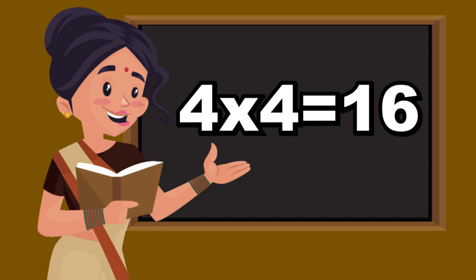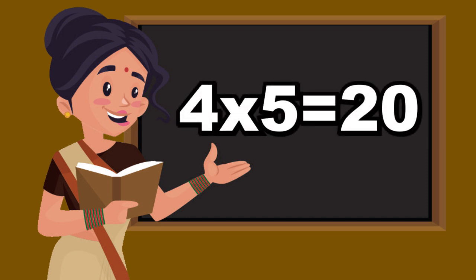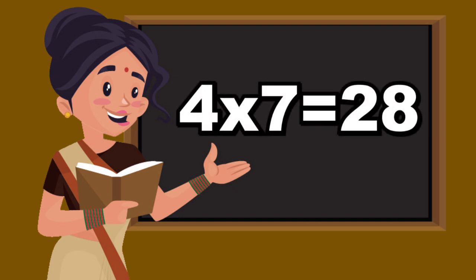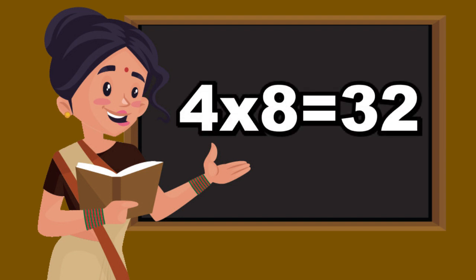Four fives are twenty. Four sixes are twenty-four. Four sevens are twenty-eight. Four eights are thirty-two. Four nines are thirty-six.